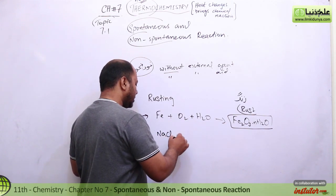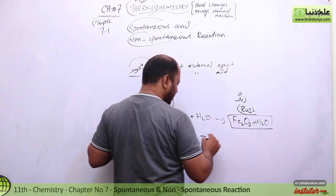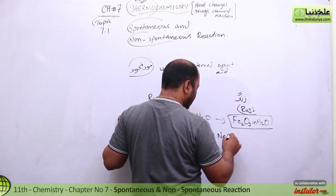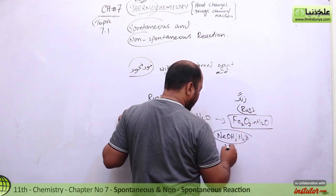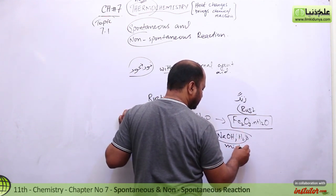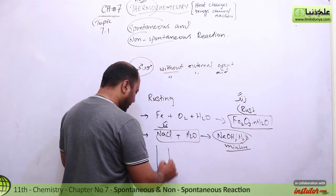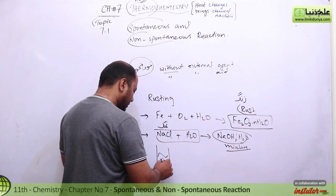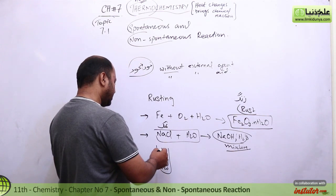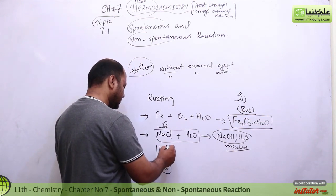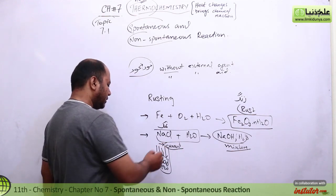Another example: you have sodium chloride — namak — and you have water. NaCl paani mein aa gaya hai, toh yeh mixture ban gaya. Ab agar aap is mixture ko, yani NaCl and water, you give some current to it — current denge.